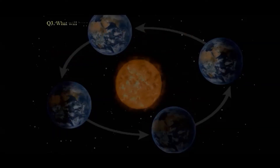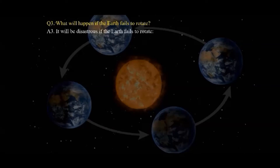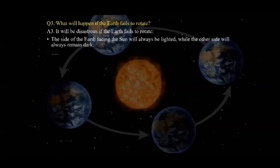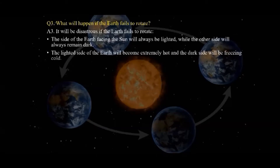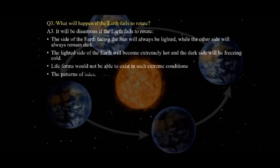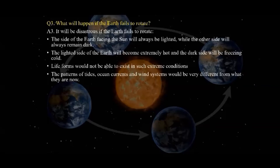Next: what will happen if the Earth fails to rotate? It will be disastrous if the Earth fails to rotate, because the side of the Earth facing the Sun will always be lit while the other side will always remain dark. The lit side will become extremely hot and the dark side will be freezing cold. Even life forms would not be able to exist in such extreme conditions. Also, the patterns of tides, ocean currents, and wind systems would be very different from what they are now.